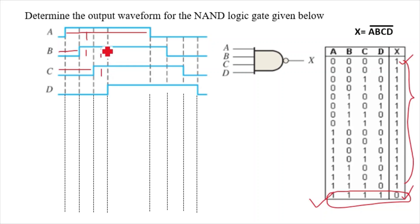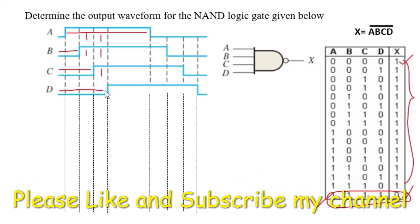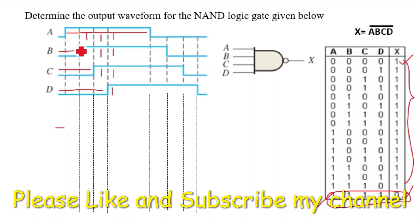Now checking C — C is 0 for this portion, then C becomes 1. Next is D — D is 0 here and becomes 1 here. So A is 1, B is 1, C is 1 here, and your output will become 0 for this entry. Before this, A is 0, B is 0, C is 0, D is 0, so for all zeros you get output 1. This output X remains 1.